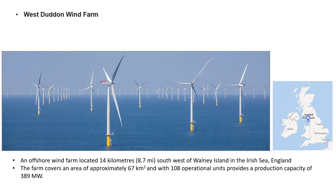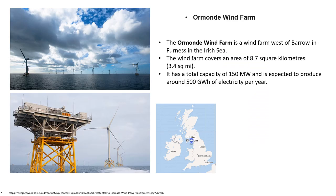This farm has 108 operational units providing a production capacity of 389 MW. Barrow Wind Farm is another wind farm located nearby. It is located west of Barrow-in-Furness in the Irish Sea, covers an area of 8.7 km², has a total capacity of 150 MW, and is expected to produce around 500 GWh of electricity per year.